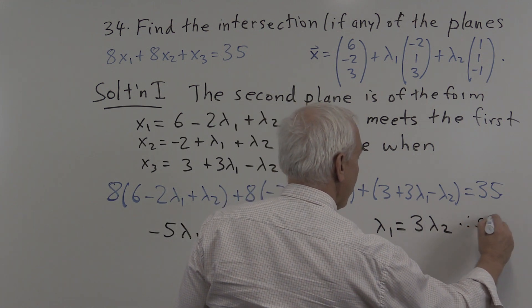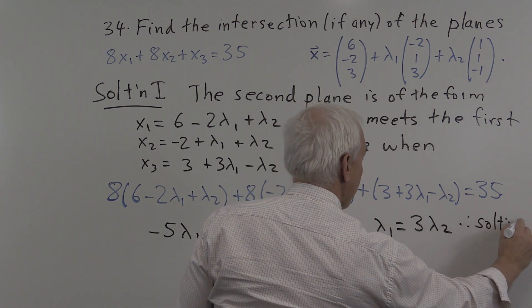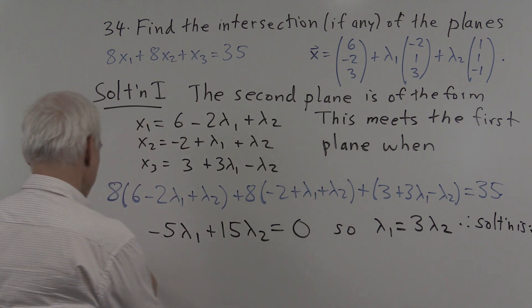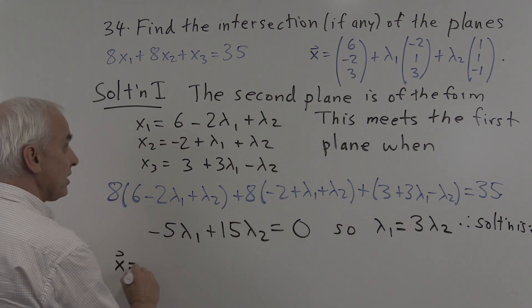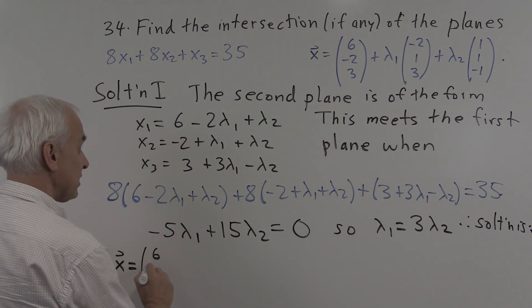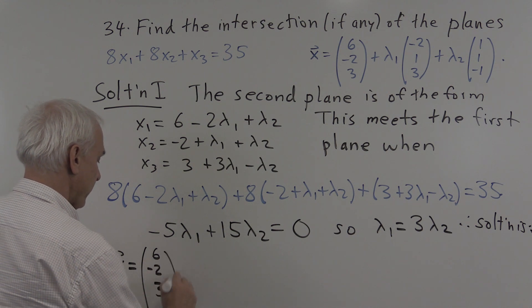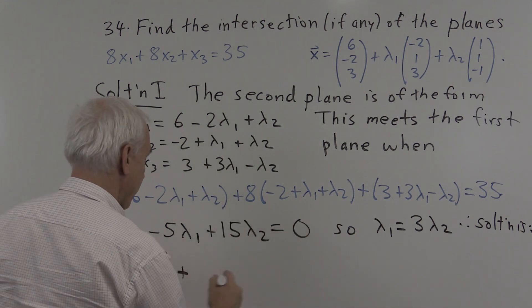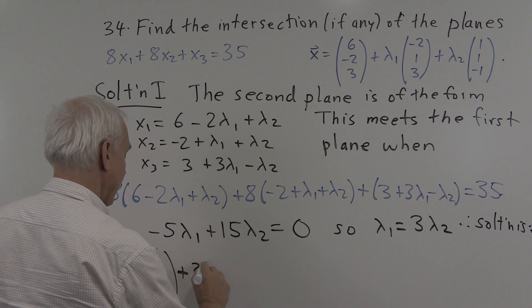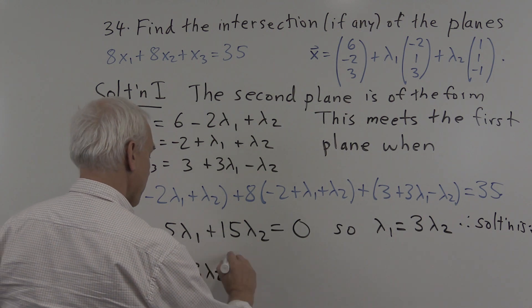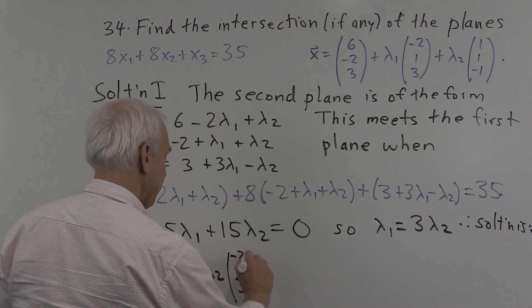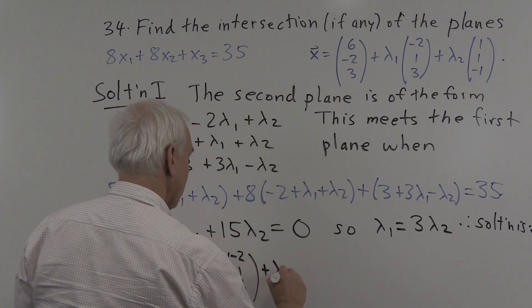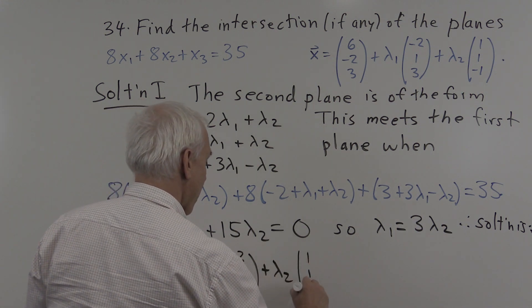Therefore the solution is, it's right here, the vector x which is 6 minus 2, 3. And I'm going to replace the lambda 1 with 3 lambda 2. So 3 lambda 2 times minus 2, 1, 3 plus lambda 2 times 1, 1, minus 1.